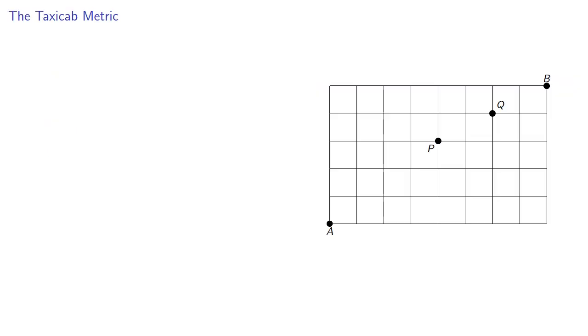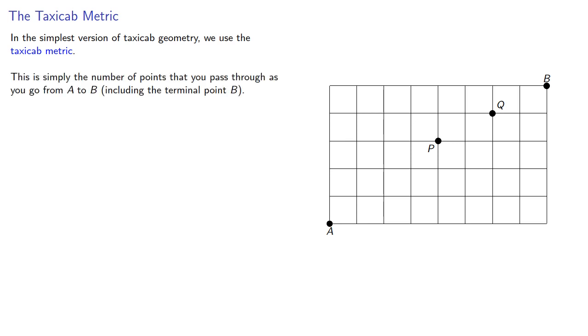If we want to define straight lines in discrete geometry, we also need a way to define distance. So in the simplest version of taxicab geometry, we use the taxicab metric, and this is simply the number of points you pass through as you go from A to B, including the terminal point B.